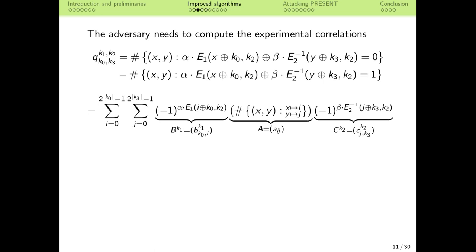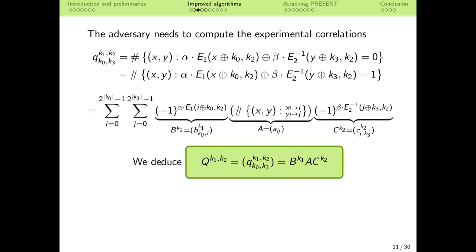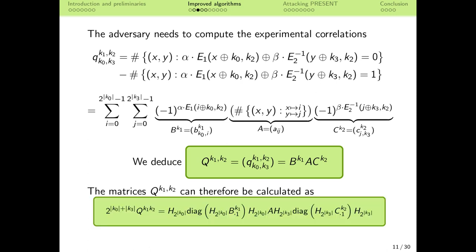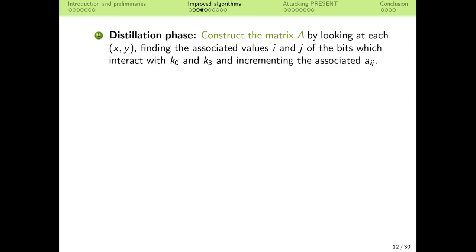We will now rewrite the correlations as we did in the previous attack. For a fixed value of k1 and k2, we can rewrite the correlations for all guesses of k0 and k3 as the product of three matrices. The matrix A can easily be obtained from the data. The matrices Bk1 and Ck2 only depend on the respective subkeys in their superindex and can be precomputed. Furthermore, Bk1 and Ck2 have the same structure as the matrix C in the previous attack and exhibit the same Walsh transform-based decomposition. From this formula, we construct the following algorithm.